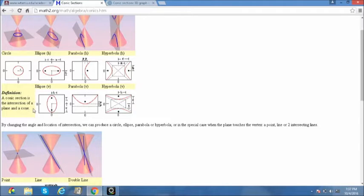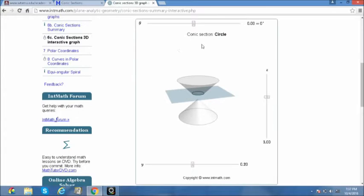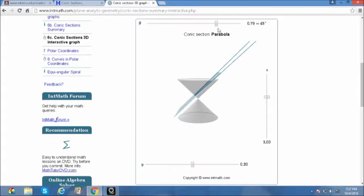Conic section is the intersection of a plane and a cone. By changing the angle of location of intersection, we can produce a circle, an ellipse, a parabola, or hyperbola.